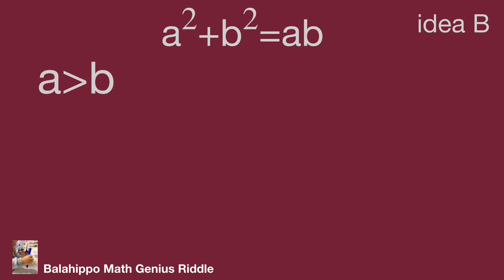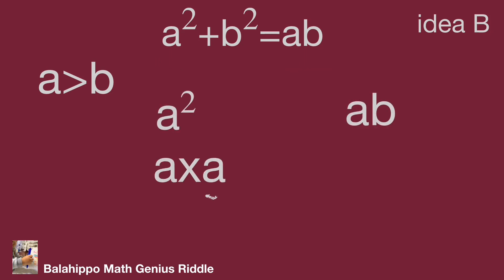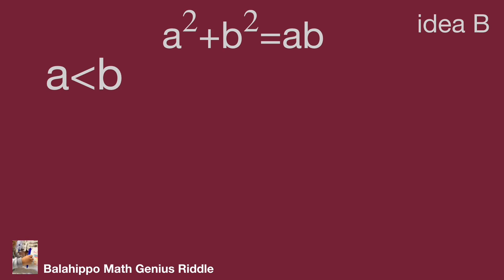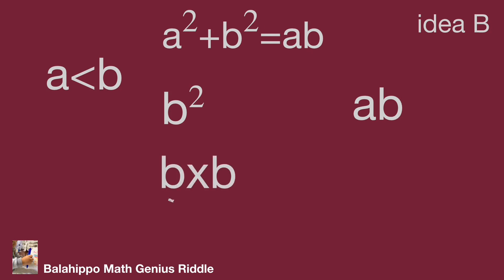When a is greater than b: compare a squared on the left side with ab on the right side. Since a squared equals a times a and a is greater than b, we get a squared greater than ab, which means a squared plus b squared is greater than ab — so they are not equal. When a is less than b: compare b squared on the left side with ab on the right side. Since b squared equals b times b and b is greater than a, we get b squared greater than ab, giving a squared plus b squared greater than ab — again not equal.